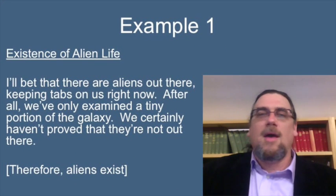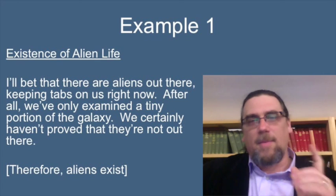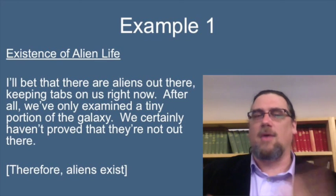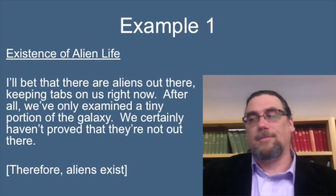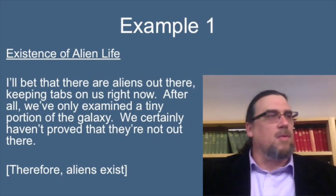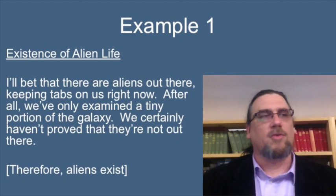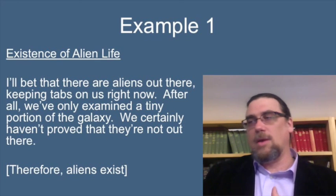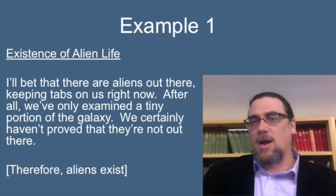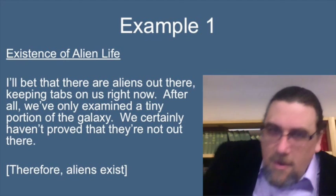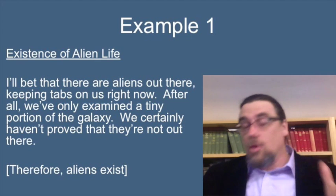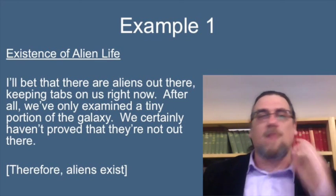Example one: existence of alien life. 'I'll bet there are aliens out there keeping tabs on us right now. After all, we've only examined a tiny portion of the galaxy — we certainly haven't proved that they're not out there. Therefore, I know aliens exist.' That's a bad argument. There could be reasons to think there are aliens — you could try to strengthen it with mathematical arguments about the likelihood of life — but simply saying we haven't proved they're not out there, therefore they are out there, is the problem. It's not just saying they could be out there; it's claiming they definitely are.